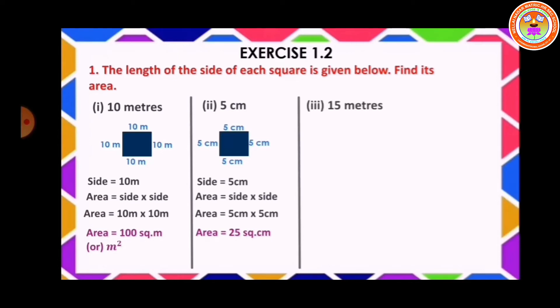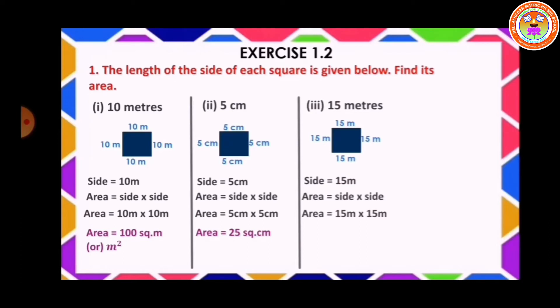Third sum: 15 meters. Draw the square, each side 15 meter. Side is equal to 15 meters. Area equal to side into side, area equal to 15 meter into 15 meter. The answer is area is equal to 225 square meter.